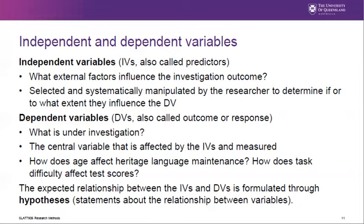The independent or predictive variables represent external factors that influence the investigated outcome. These are selected and systematically manipulated by the researcher to determine if or to what extent they influence the dependent variable. The dependent variable is the central variable being investigated, affected by the independent variables. For example, if we ask how age affects heritage language maintenance, age acts as our independent variable, and heritage language maintenance is the dependent variable. This relationship can be formulated as either directional or non-directional through a hypothesis.